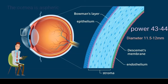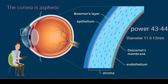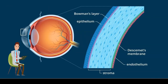The transparent part of the fibrous layer is called the cornea. It has a power of 43 to 44 diopters and a horizontal diameter of around 11.5 to 12 mm. The vertical diameter is less than the horizontal by 1 mm. The power of the cornea is greater in the center and less in the periphery — this is called the aspheric cornea, which has the advantage of decreasing optical aberrations.